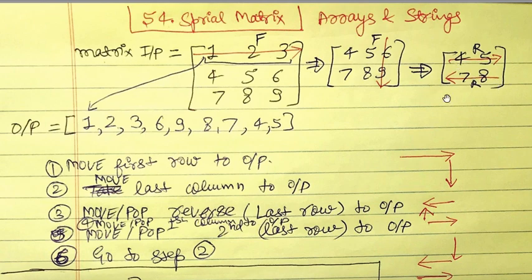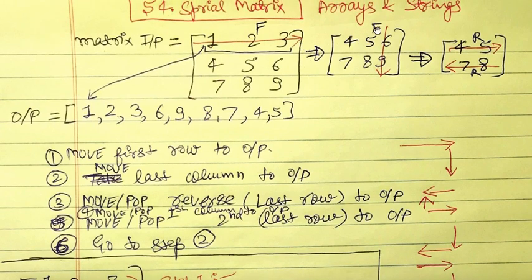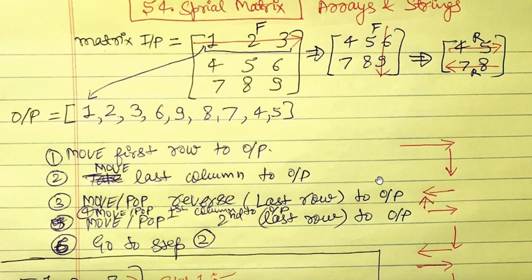After popping the last column elements, we are left with [[4,5],[7,8]]. Now to continue the spiral going right-to-left, we pop the last row using `matrix.pop()`, but we must reverse it. So [7,8] reversed becomes eight seven. In Python, reversing a list uses `[::-1]` notation — colon colon minus one reverses the string or list.